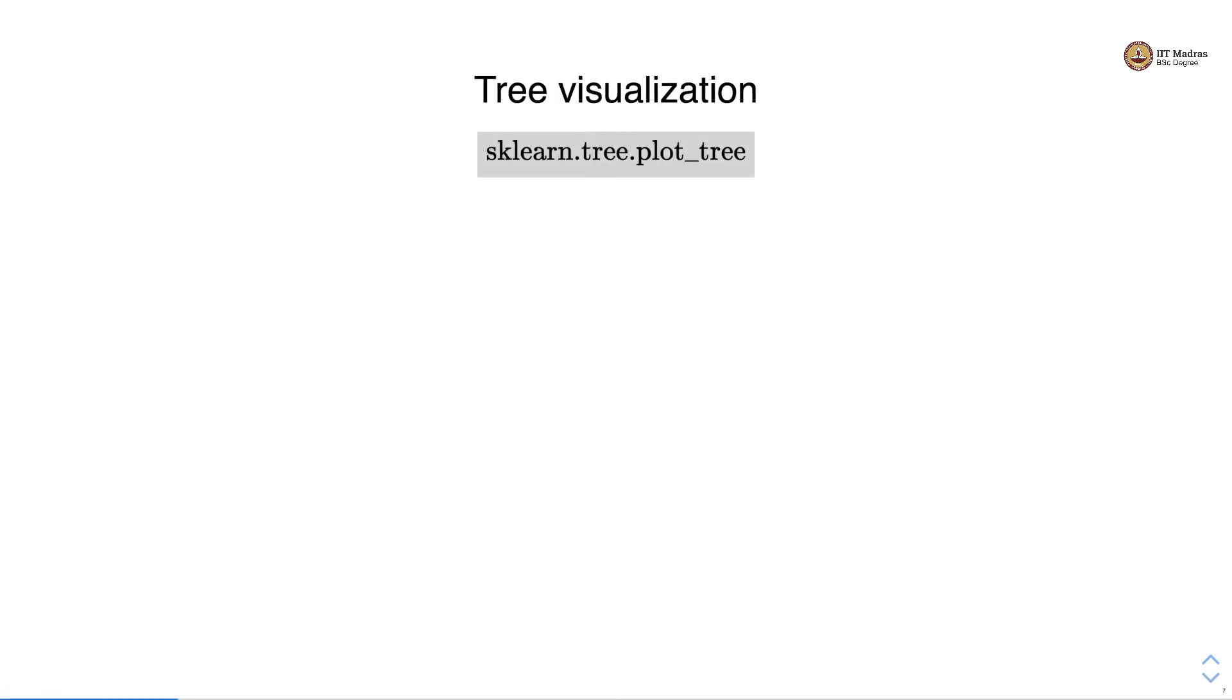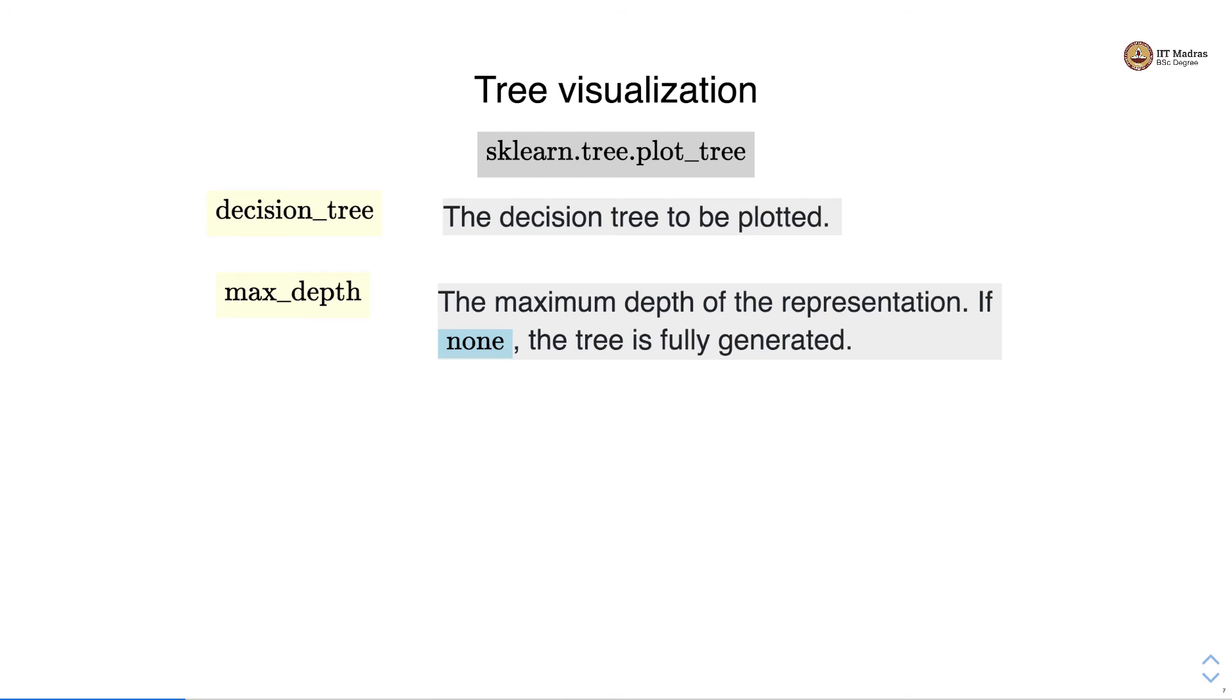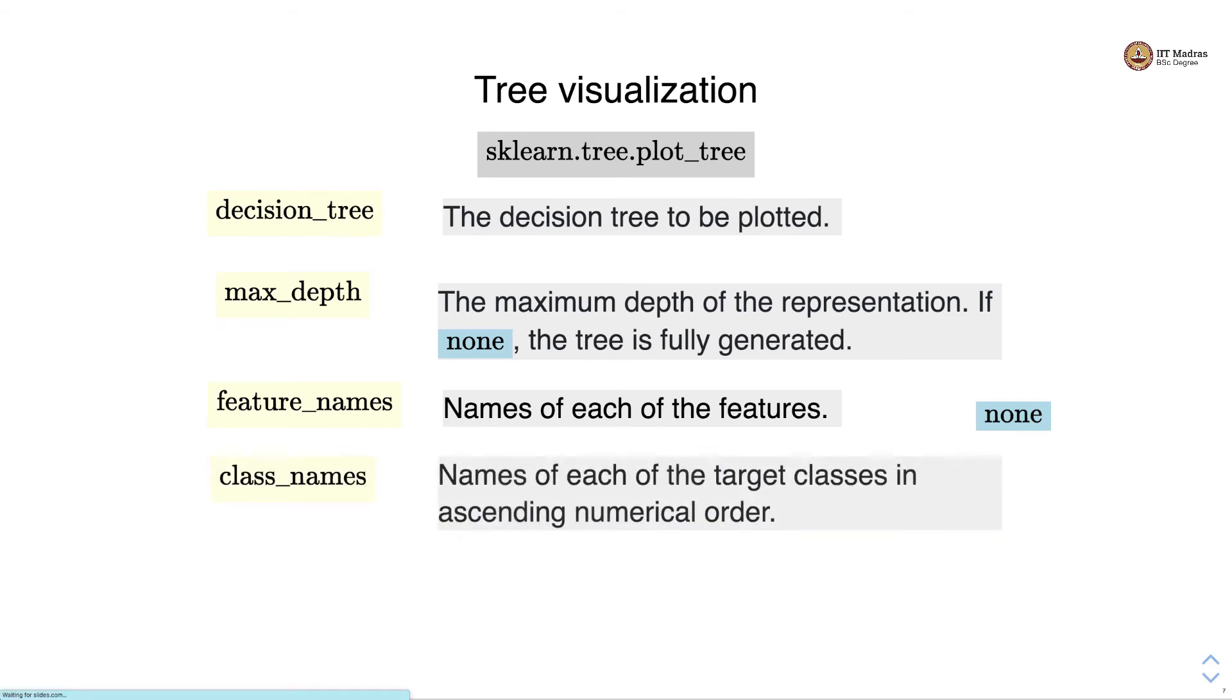After the tree is trained we can visualize it with sklearn.tree.plot_tree utility. It takes the following parameters: the decision tree estimator to be plotted, then the max_depth of the representation. If max_depth is none which is the default value, the full tree is shown in the plot_tree utility. Then you have to specify names of each feature in feature_names argument which by default takes none. Then there are class_names where we specify names of each target class in ascending numerical order, by default this is also none. And finally the label where we specify whether to show informative label for impurity. By default label is also none.